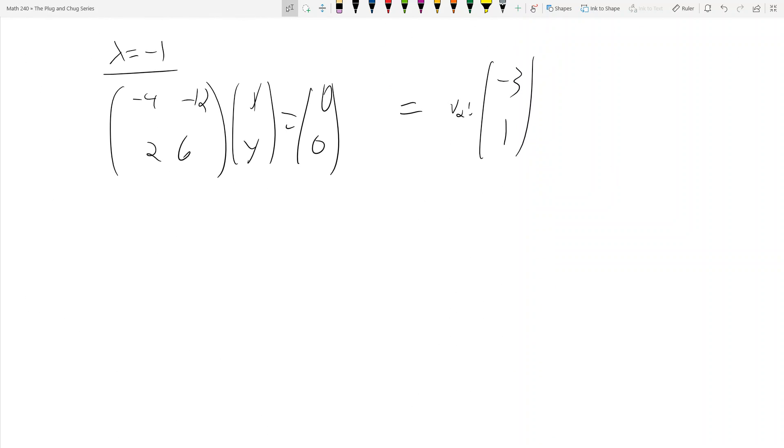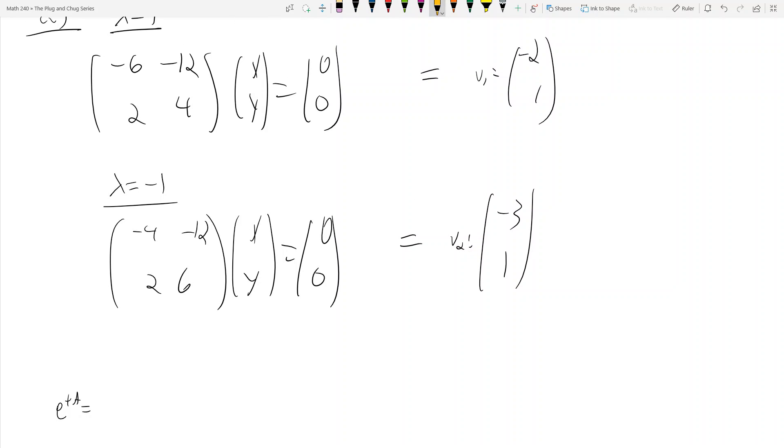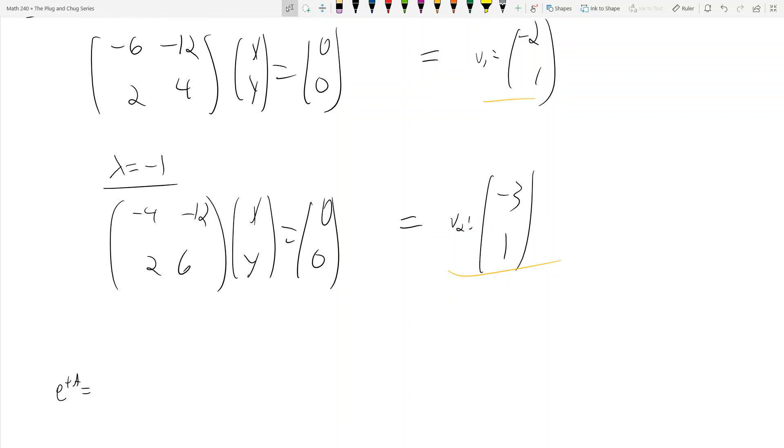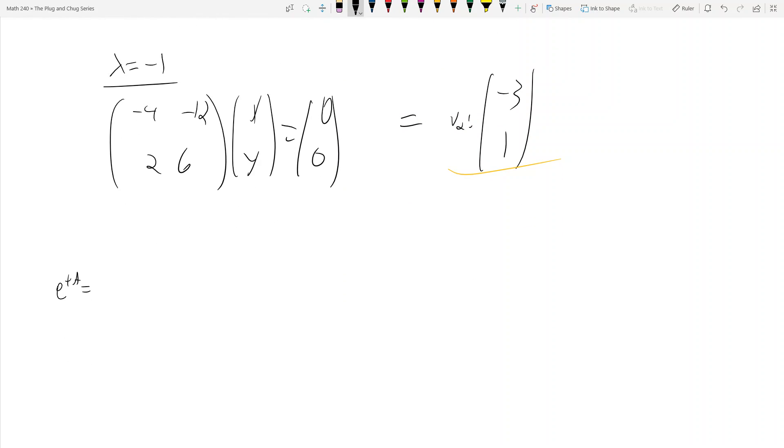And so what do we do? Well, the idea is this: e to the tA is equal to some ridiculous summation formula based on the power series of e, which don't get me wrong, that actually becomes very useful. It's the I plus AT plus AT² over 2 factorial. It's that one, it's in your book. It's the one that when the professor puts on the board you guys are like 'what the hell is this?' That one doesn't get used as much.